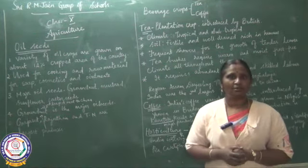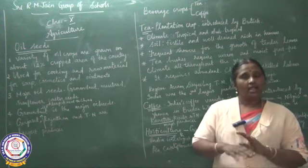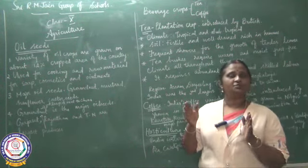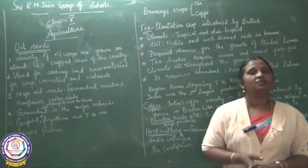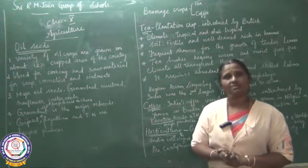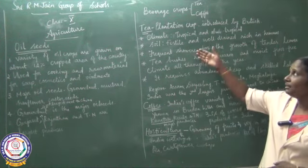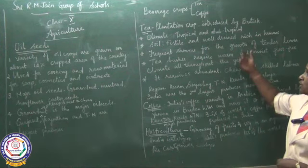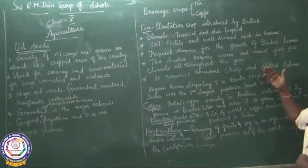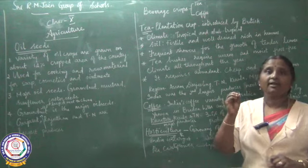Tea is said to be a plantation crop. When teaching about commercial farming, I told you about plantation crops where a single crop grows on a large area — it might be tea or coffee — for commercial or profit purposes, with very large investment. This plantation crop was introduced by the British. The climate for tea can be both tropical and subtropical, and the soil should be fertile, well-drained, and rich in humus.